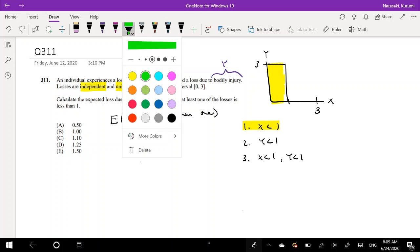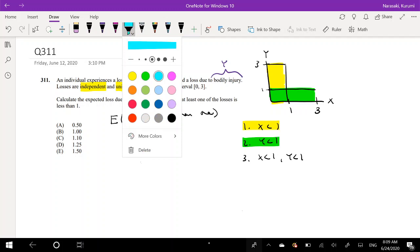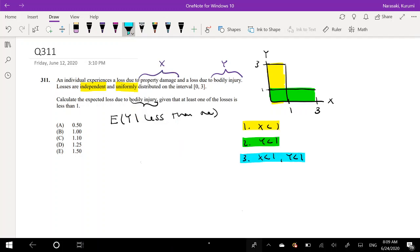And y is less than 1 in this region right here. But y is less than 1 in this region right here and both x is less than 1 and y is less than 1. This region right here is this part right here. So it's this part.